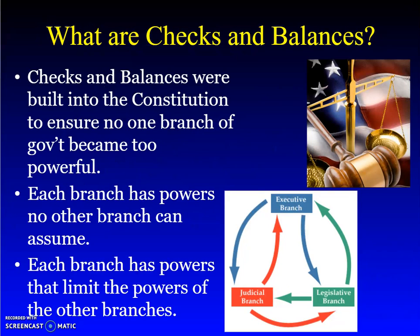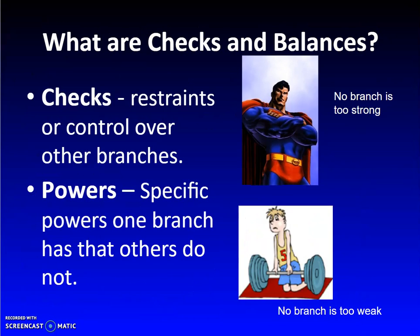When we look at what checks and balances are, they are limitations on the powers of the other branches. The checks are your restraints or controls over the other branches to make sure no branch is too strong. The powers are also in there — specific powers that one branch has that others do not — to make sure that branch is not too weak.